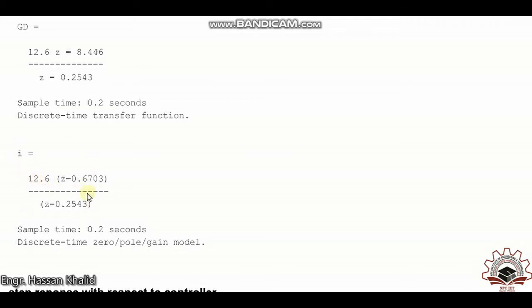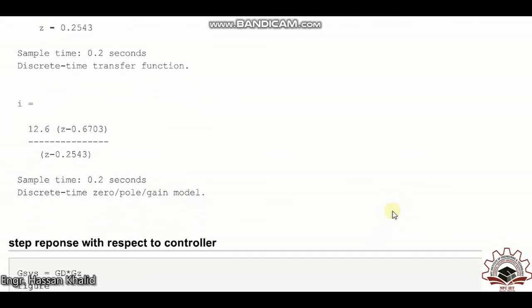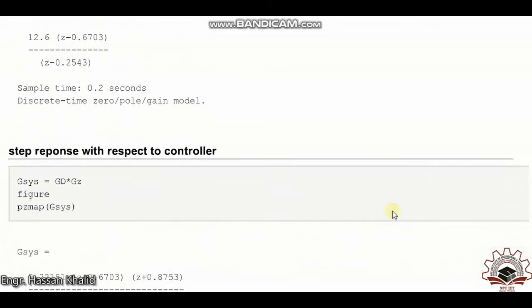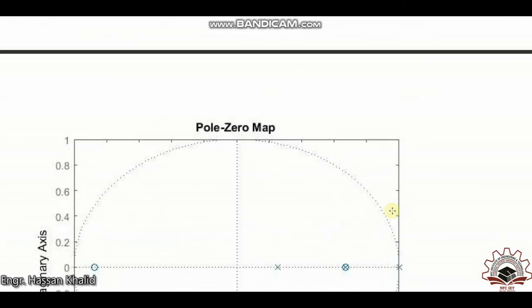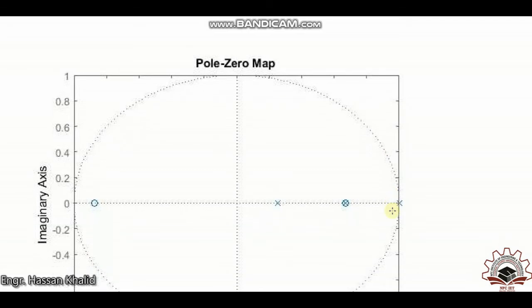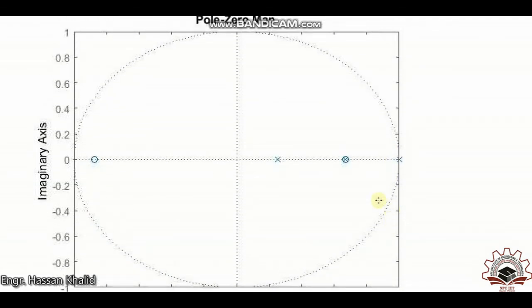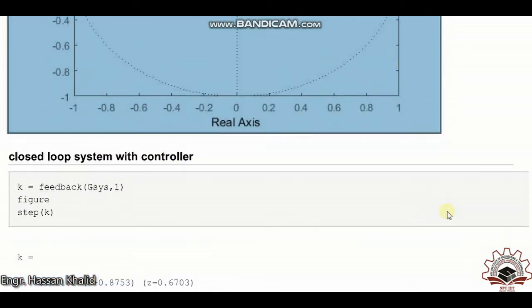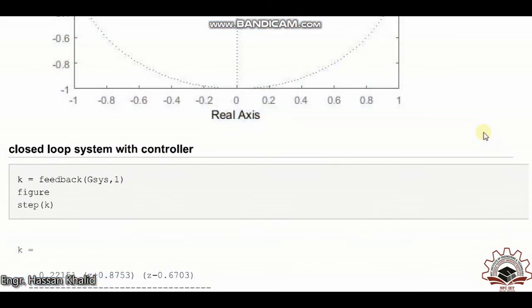Now let's repeat the same steps and take the step response of our system. You can now easily realize that there is a pole-zero cancellation occurring due to the digital controller, because we have chosen the alpha value that was equal to one of the poles in the open loop impulse transfer function.